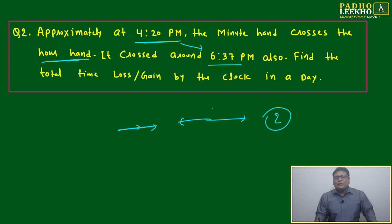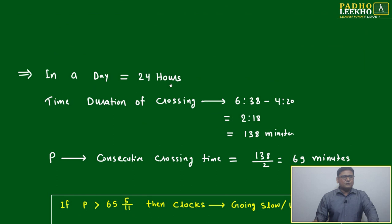Once we get that number or data, we will compare it with 65 × 5/11 minutes, and we'll be able to find if it is loss or gain - if it's a loss, how much loss; if it's a gain, how much gain in a day. Just basic calculation.